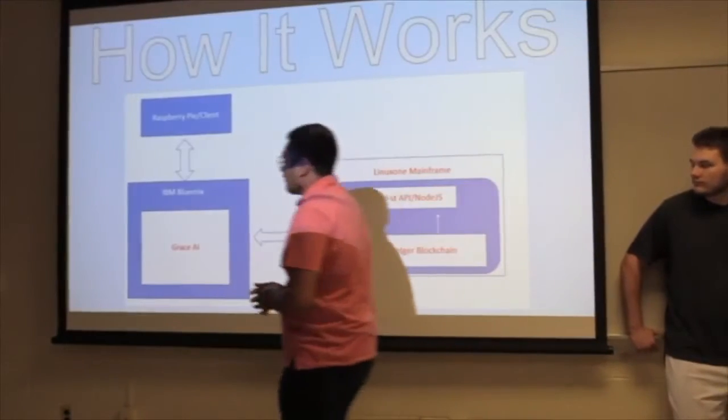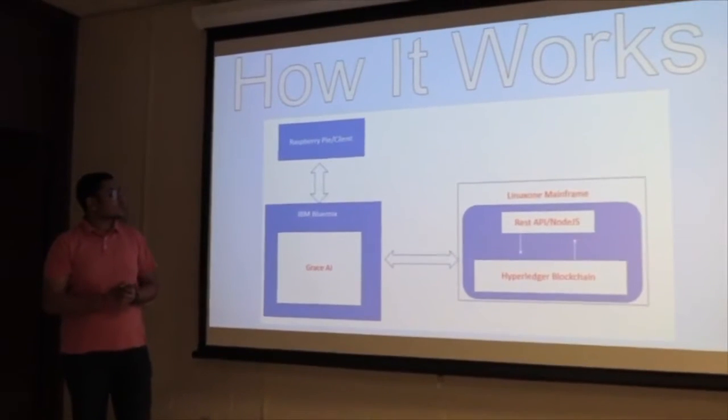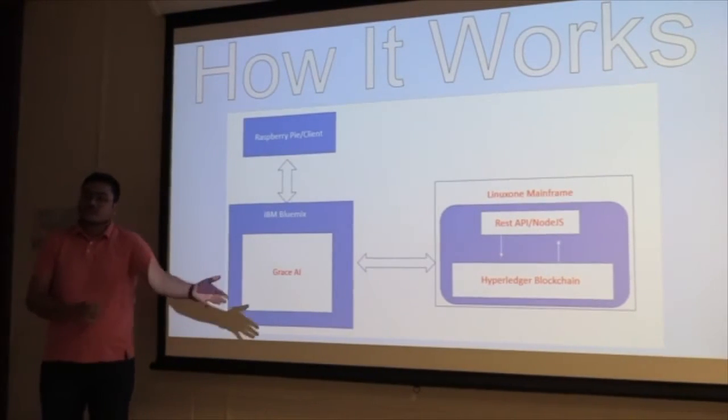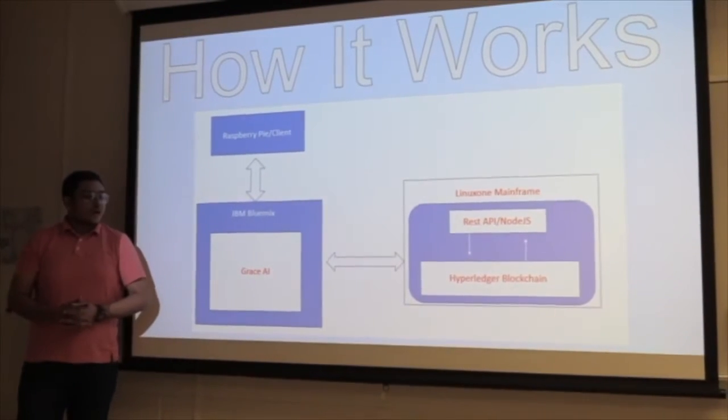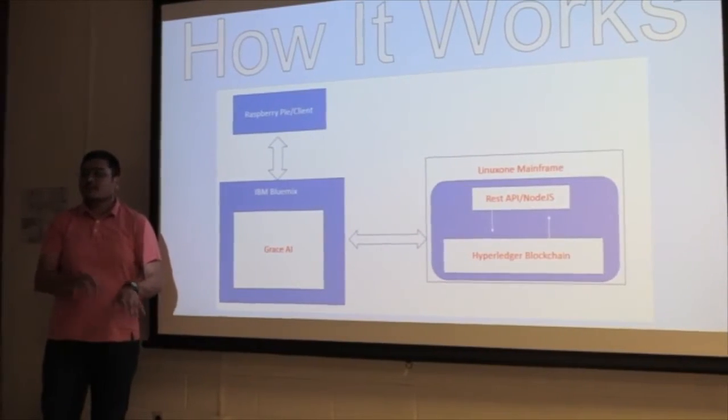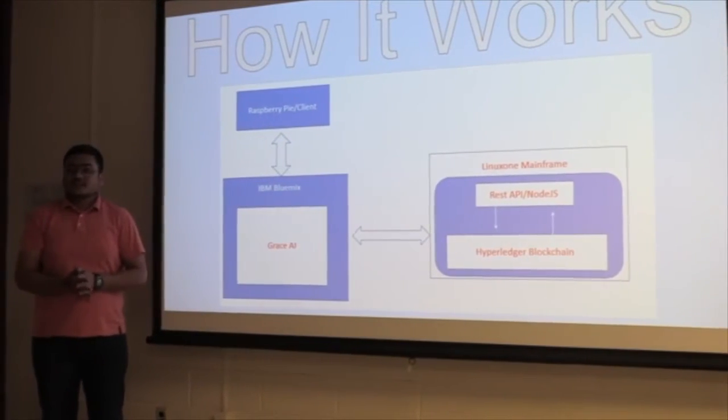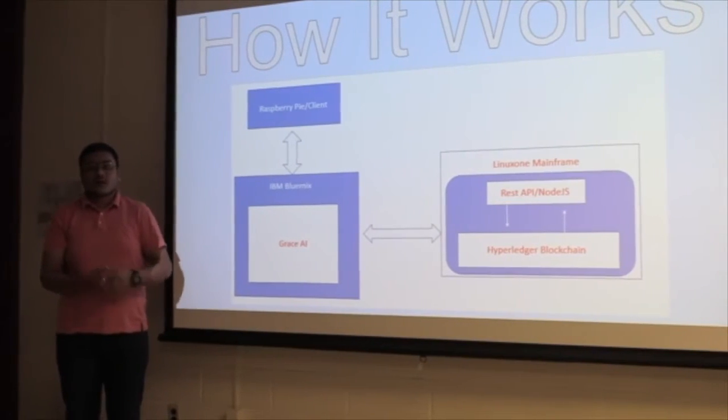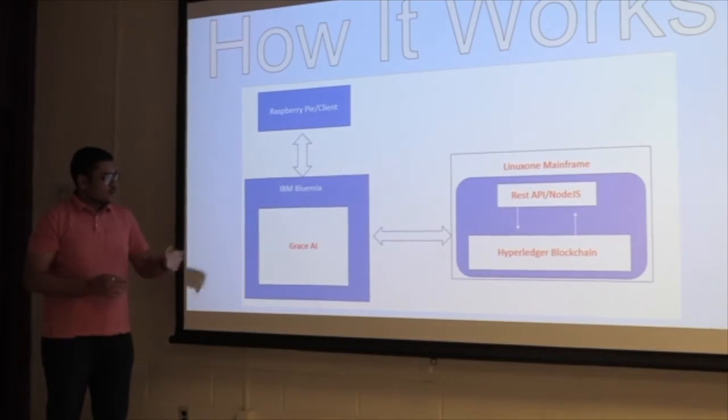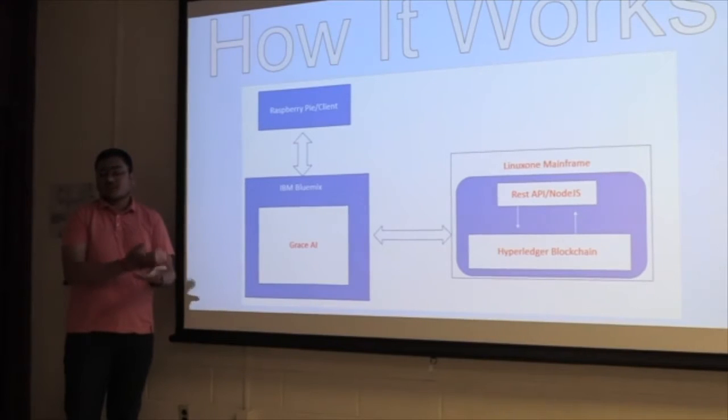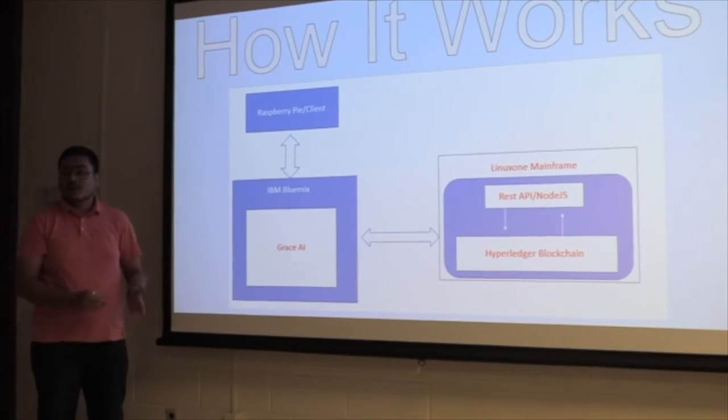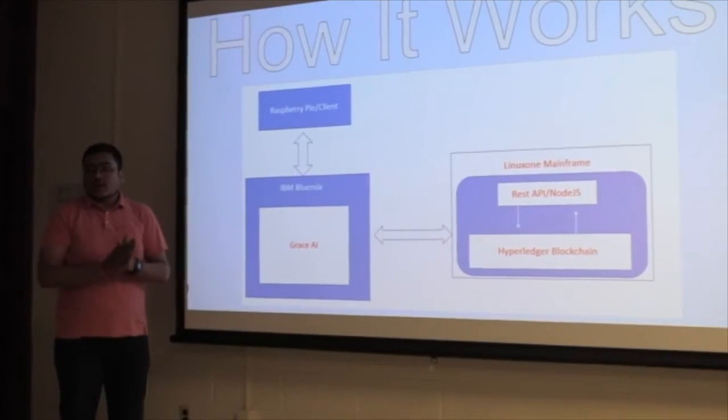We have Raspberry Pi which acts as our front-end client—actually anything can be a client. For demonstration, we're showing our computer which acts as a client similar to Raspberry Pi. We also put that as a server so anybody can access the Grace front-end and can train it and interact as a client. It takes the raw text and sends it to the Grace AI which runs on the cloud, IBM BlueMix. Grace AI takes the raw data, parses it and tokenizes, and sends it to the Linux one Hyperledger blockchain which runs on Linux one mainframe.